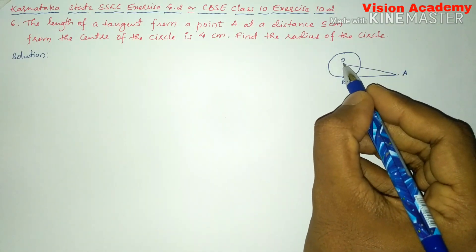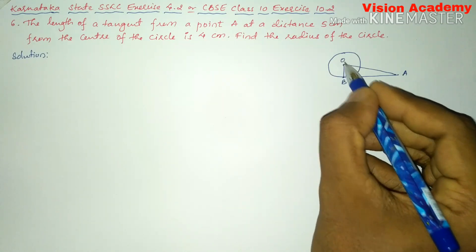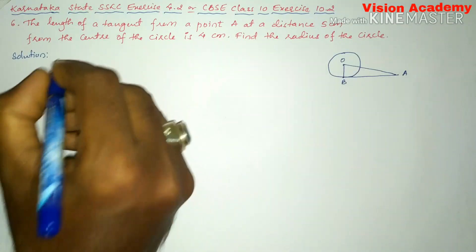So, therefore, we got the right angle triangle OBA by Pythagoras theorem.